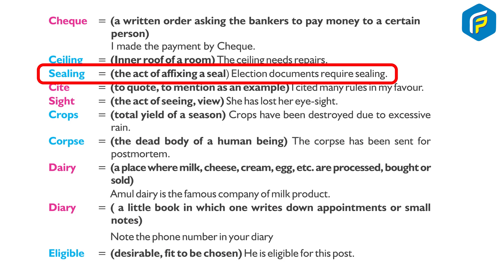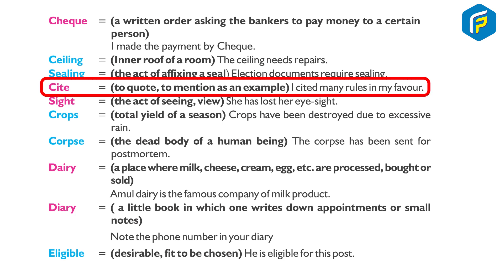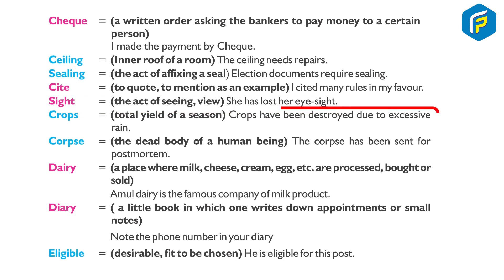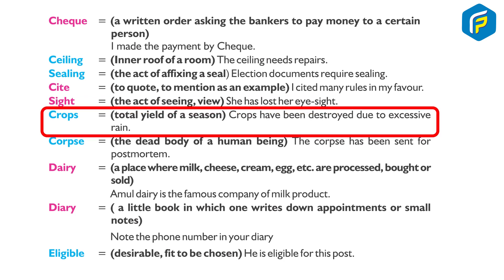Ceiling: the top inner surface of a room — 'The ceiling needs repair.' Sealing: the act of affixing a seal — 'An election document requires sealing.' Cite: to cut or to mention as an example — 'I cited many rules in my favour.' Sight: the act of seeing or view — 'She has lost her eyesight.'